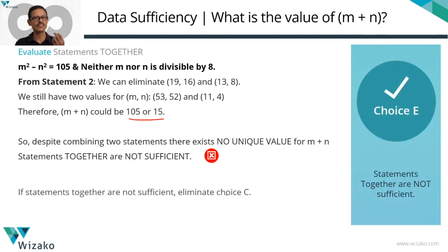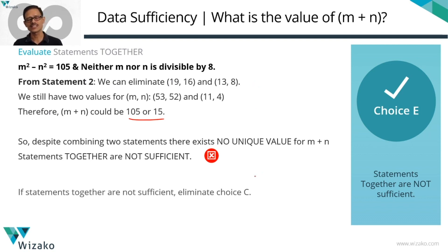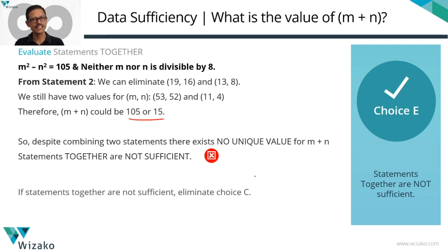So this is a case where you have to list down all the values. What makes this question a little more difficult is that by the time you get to combining the two statements, there is a lot of fatigue that sets in. Sometimes you might assume the combined statements will or won't work without properly checking. Don't let fatigue set in — at least on a few questions in the real GMAT, you'll have to check your perseverance and your ability to withstand this pressure.